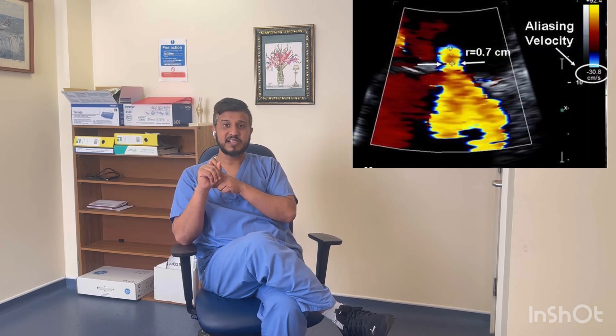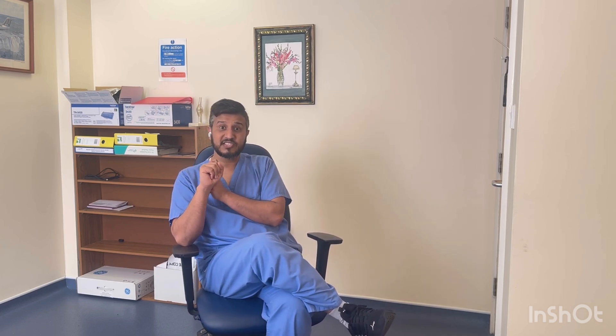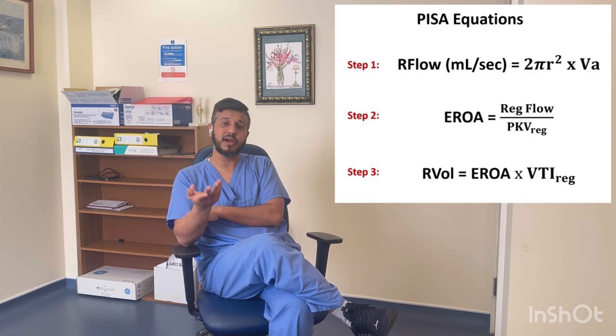When doing the PISA method, the machine mainly asks for three things: first, the aliasing velocity — some machines pick it automatically, others ask you to enter it, and some just ask you to select upper or lower aliasing velocity. Second, you trace the VTI of the regurgitation jet using CW Doppler. Third, you measure the PISA radius. Once all three measurements are done, the machine gives you both the ERO and the regurgitation volume — it calculates ERO first, then multiplies by VTI.